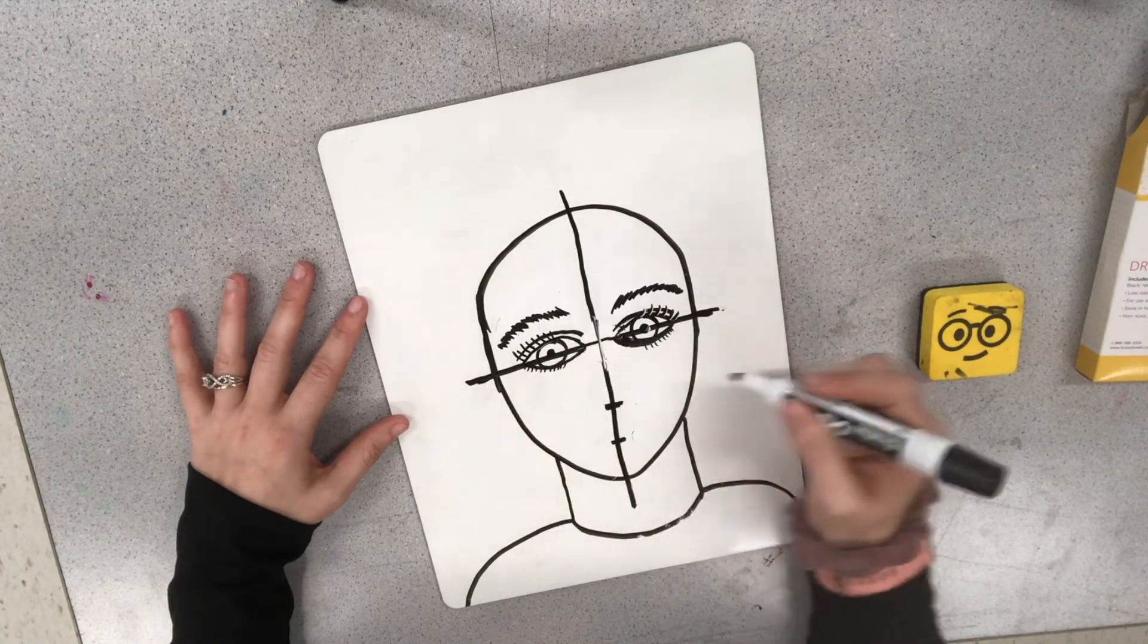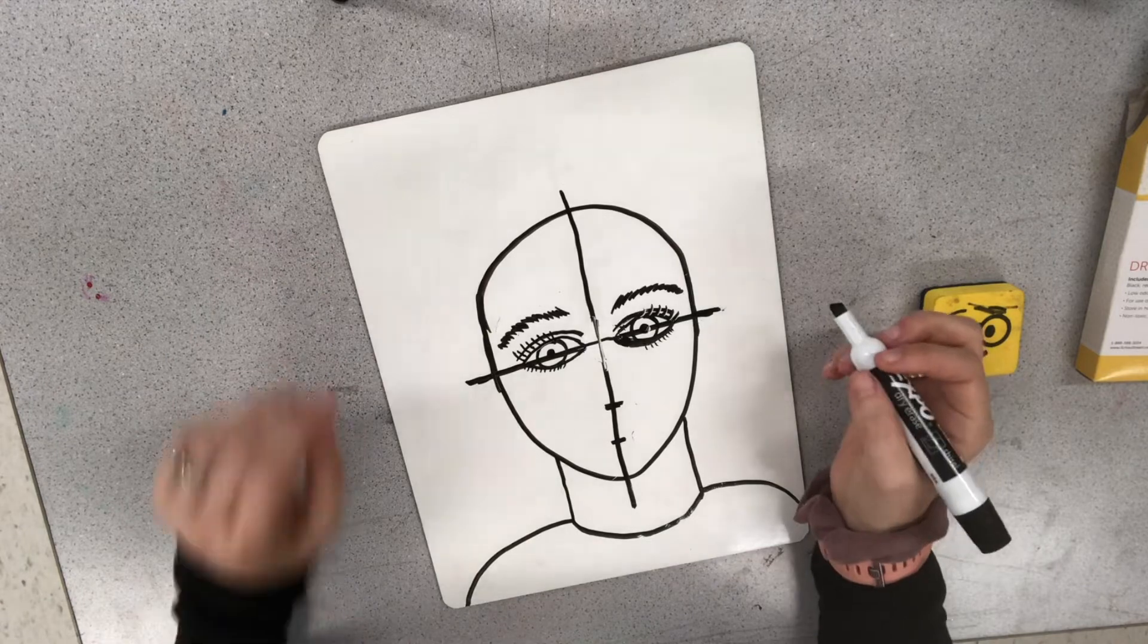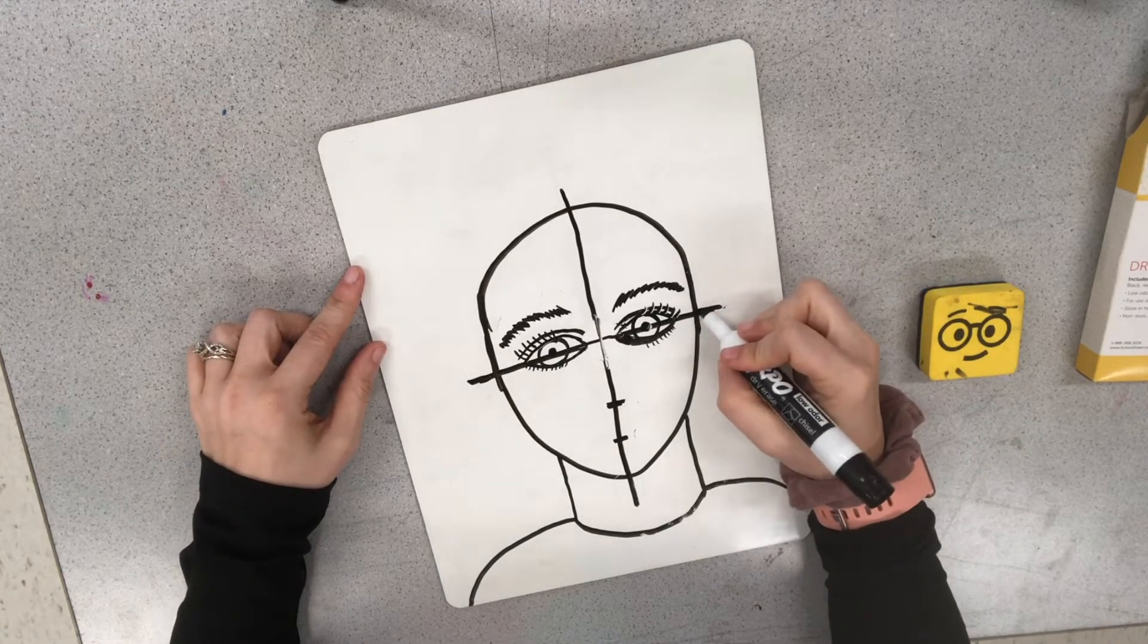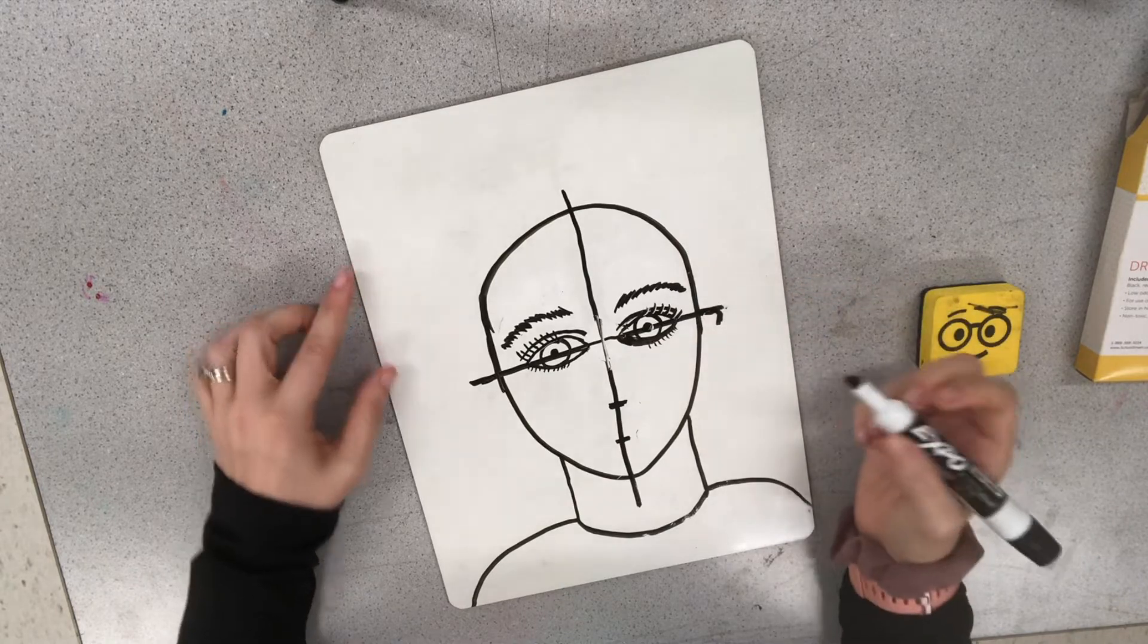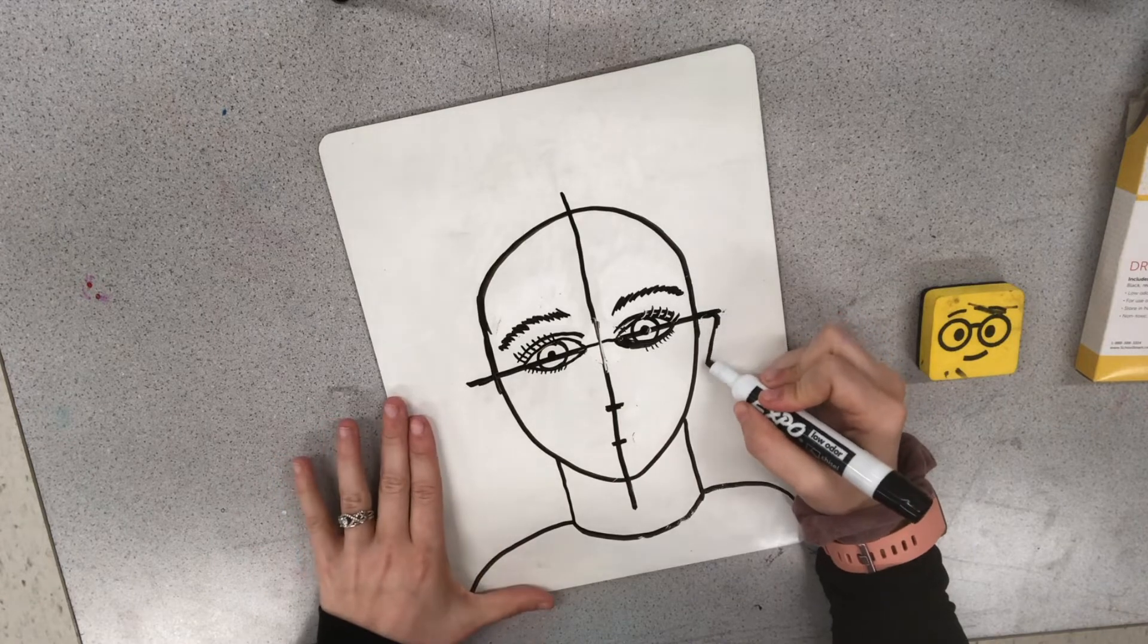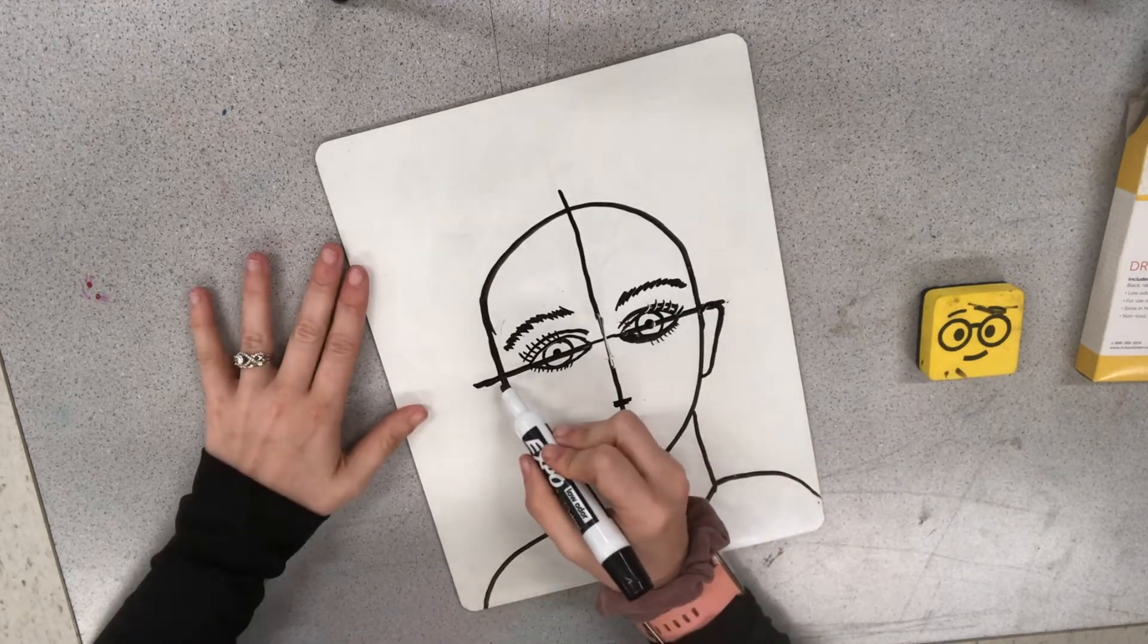Before I do that, I am going to add in the ears because that will help us with these glasses. So your ear is going to come from the line at your eyes. So it will start here. And it's going to go all the way down to this line where your nose would start. So it kind of hugs in to the side of the face. On each side.